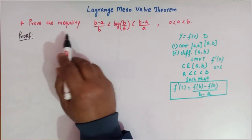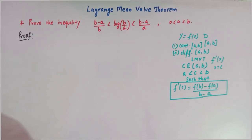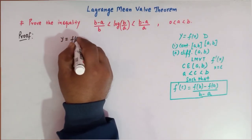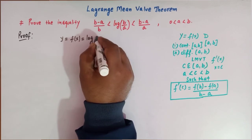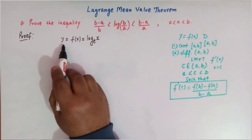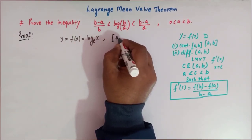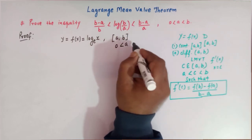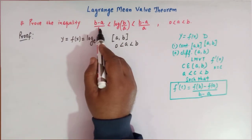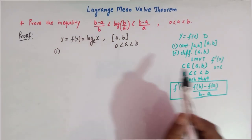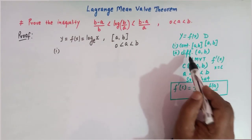To prove this inequality, the first step is to define the function y = f(x). The appropriate function to take here is y = f(x) = log(x), where the base is e, and the interval is taken as [a, b], where a and b are both greater than 0 and a is less than b. To prove this inequality we assume this type of function.